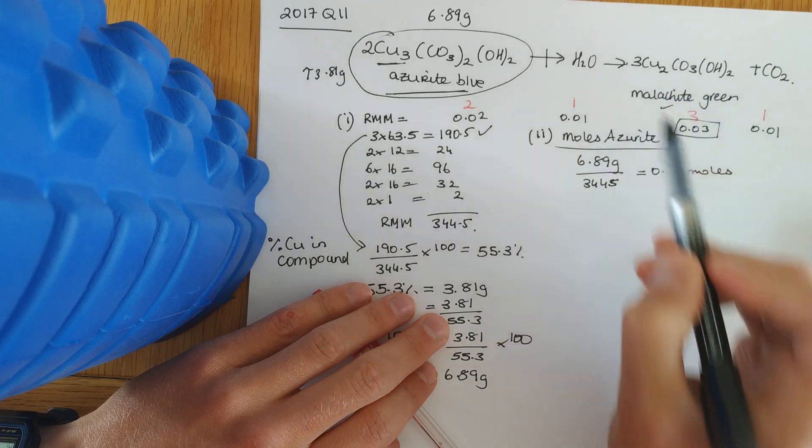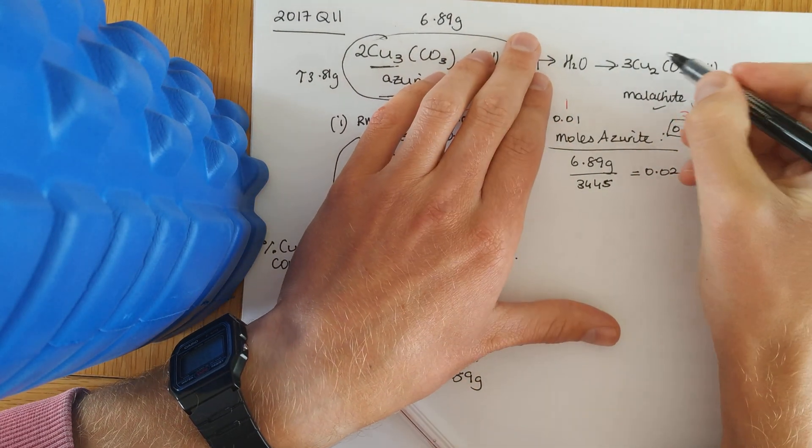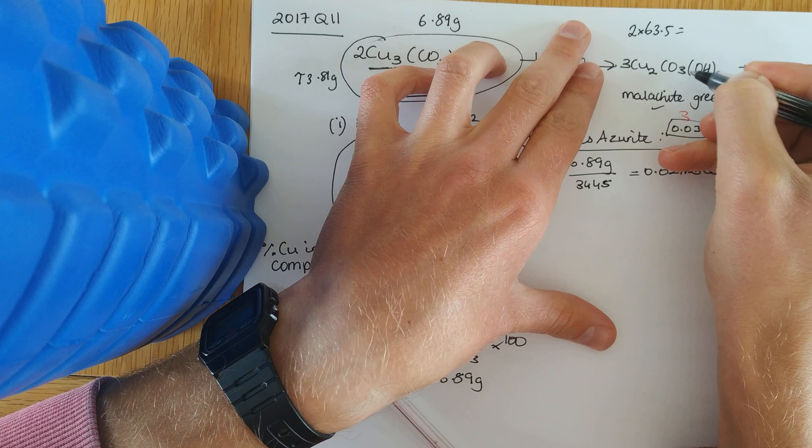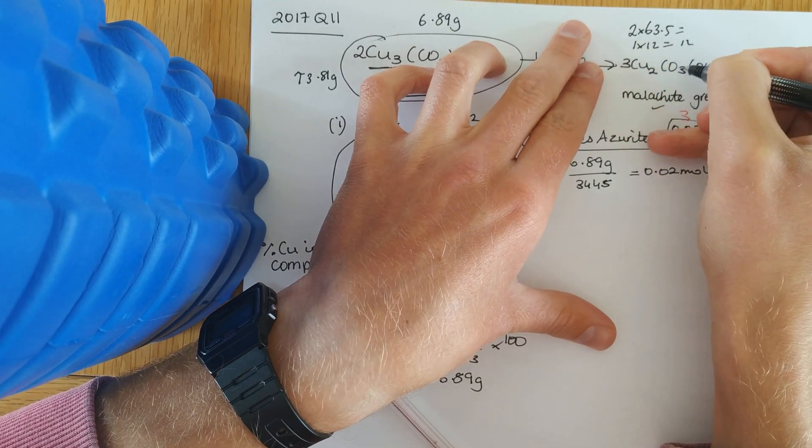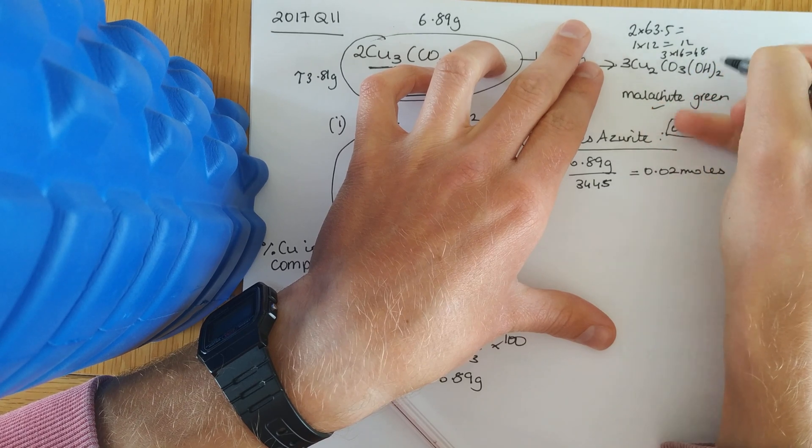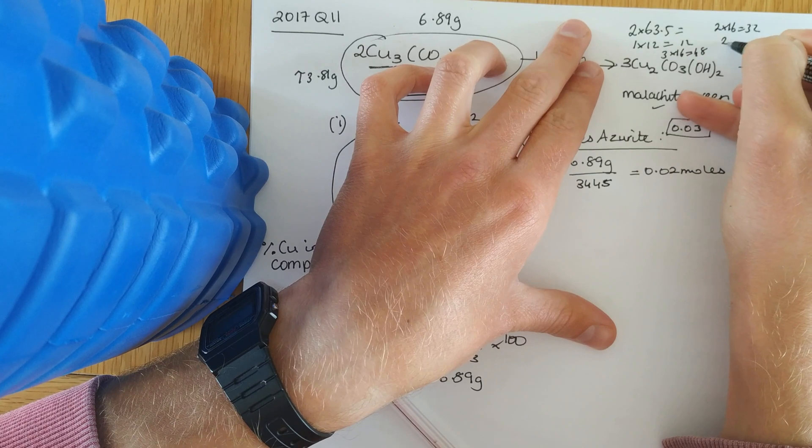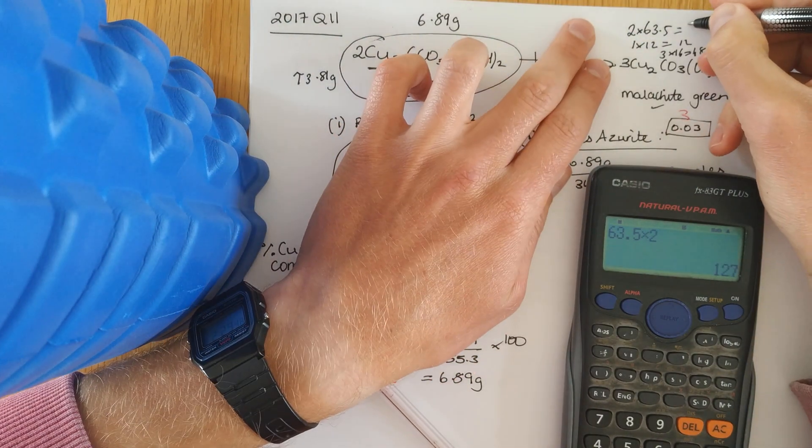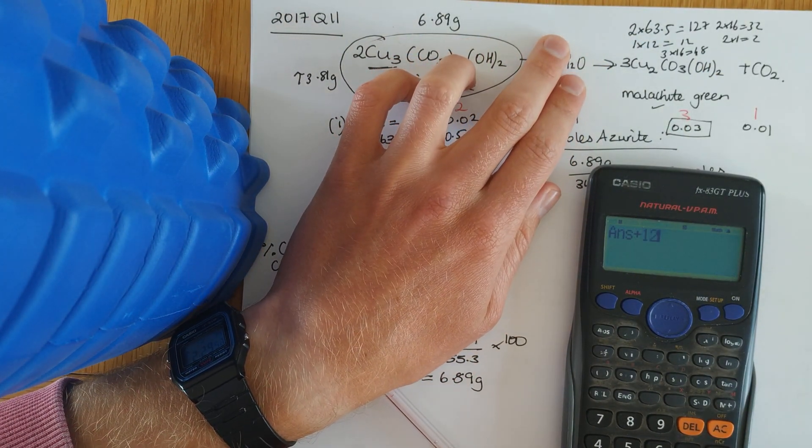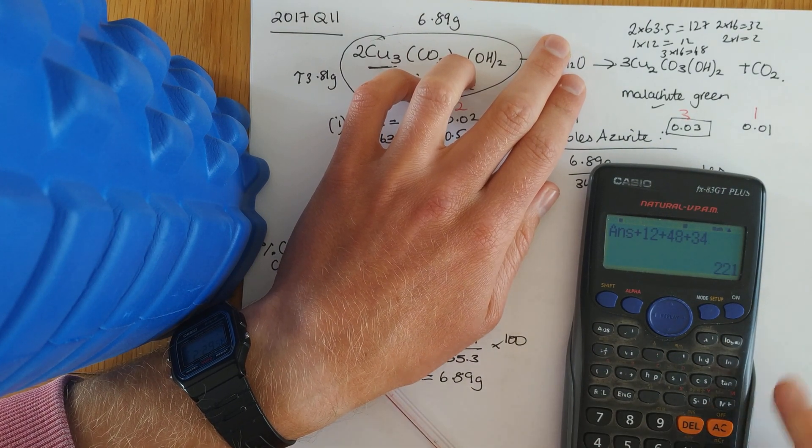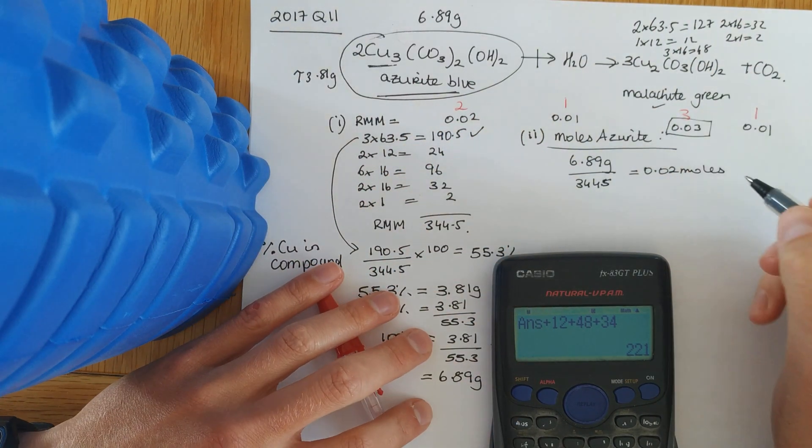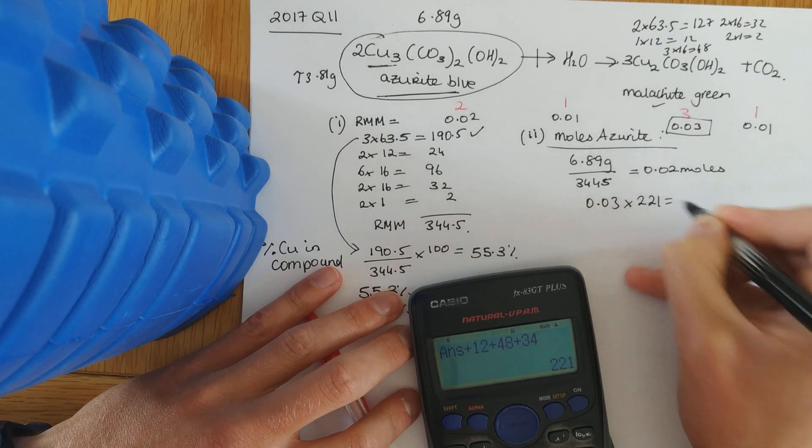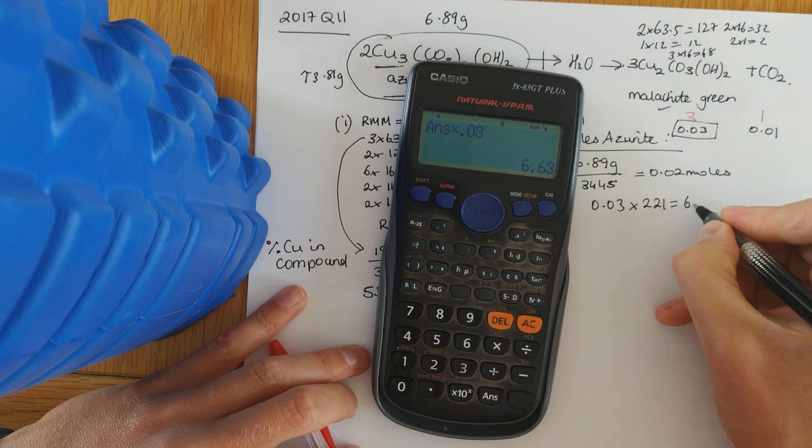So, we've got the number of moles, multiply it by the relative molecular mass of that malachite. And we'll just do it up here. Malachite. 2 by 63.5. One carbon there. Three oxygens. Two oxygens. Two hydrogens. Two hydrogens. Yeah, such names. One, two, seven. Let's retally that up. Two, two, one. So, you have 0.03 moles. multiply by the relative molecular mass of 221 and we get 6.63 grams.